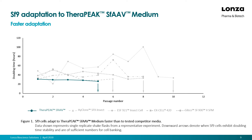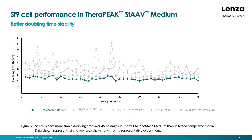Following the creation of the master cell bank, we looked at the growth performance of SF9 cells in each medium — more specifically, the doubling time over 40 passages. You can notice that with the competitor media tested, the doubling time fluctuates greatly from passage to passage, between 30 and 80 hours in some cases. However, with Therapeak SFAAV medium, the doubling time over 40 passages was stable at around 25 hours. This characteristic will allow you to know the density of the cell culture at any given day, and therefore schedule more accurately the day of infection.